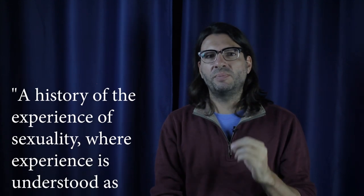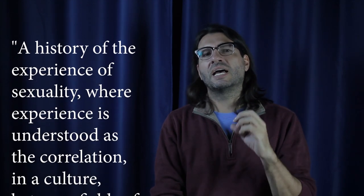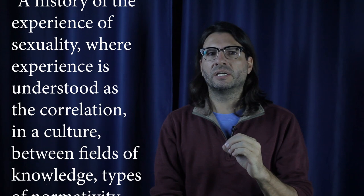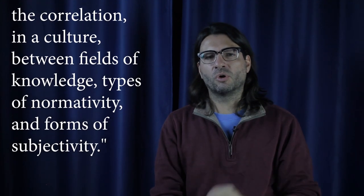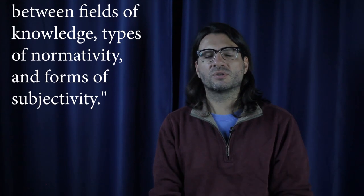But here in Volume 2, Foucault will go back more in time. He will explain that what he planned to do is a history of the experience of sexuality, where experience is understood as the correlation in a culture between fields of knowledge, types of normativity and forms of subjectivity.